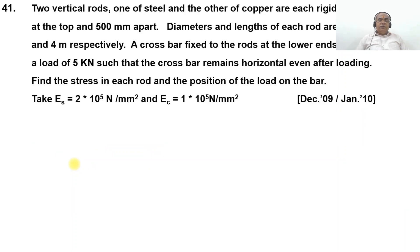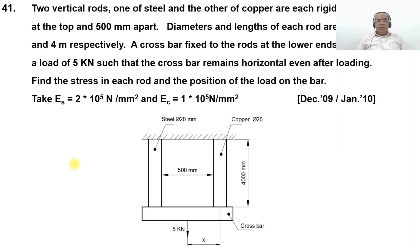This is how problem 40 is solved. Now we take up problem number 41. Two vertical rods, one of steel and the other of copper, are each rigidly fixed at the top and 500 mm apart. The diameter and length of each rod are 20 mm and 4 meters respectively. A cross bar is fixed to the rods at the lower ends and carries a load of 5 kN such that the cross bar remains horizontal even after loading. Young's modulus of steel is 2×10⁵ N/mm² and of copper is 1×10⁵ N/mm².